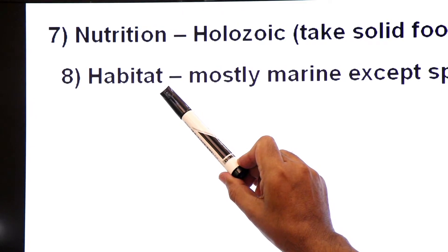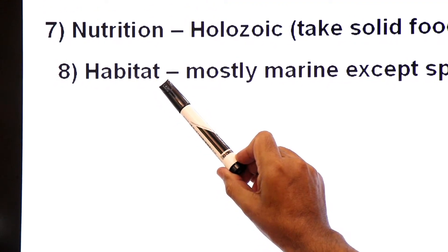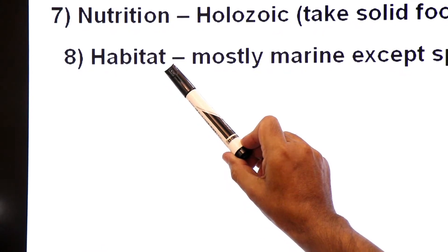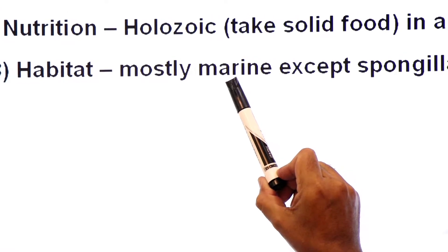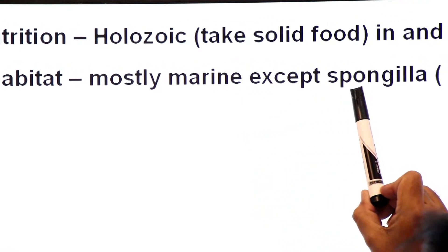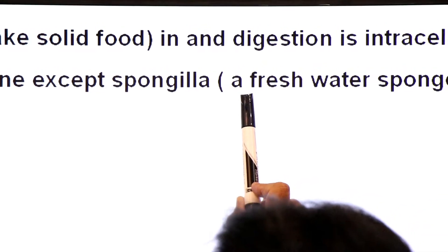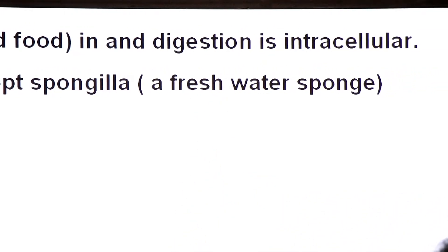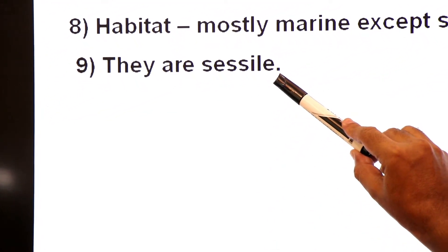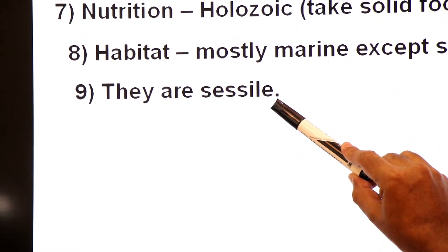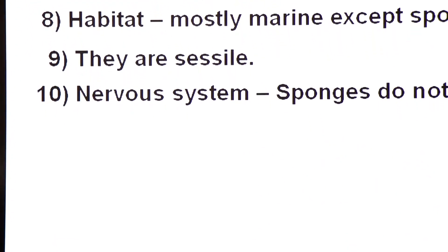Habitat is the place of living. Sponges are aquatic, meaning they live in water, mostly marine — present in sea water — except Spongilla, which is a freshwater sponge. Sponges are sessile, meaning they are fixed at one point and cannot move.